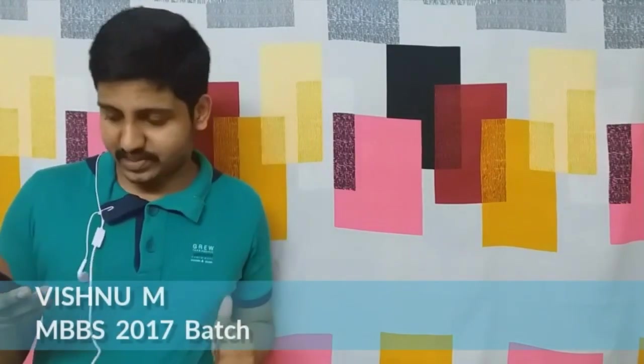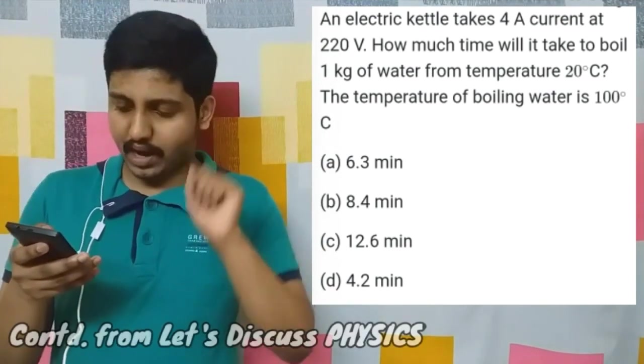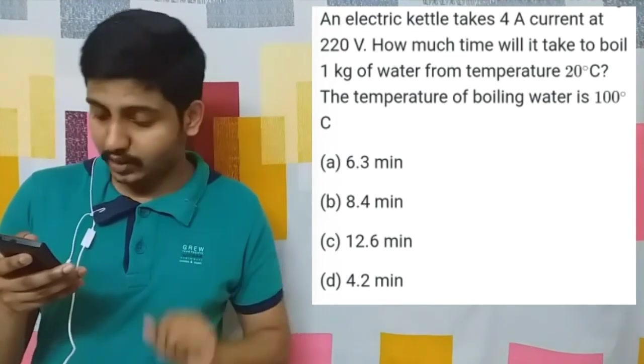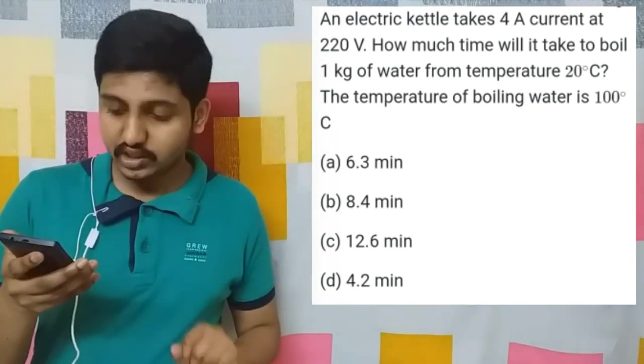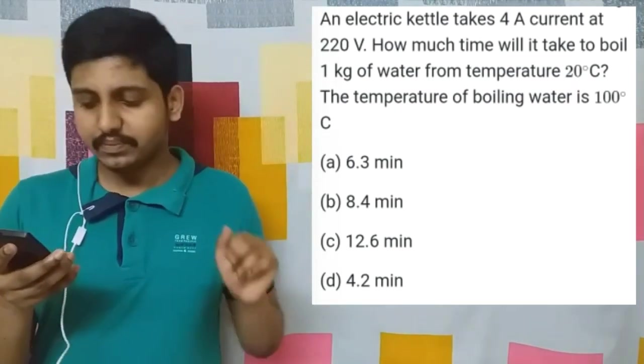Let's take the next question. This is a wonderful question involving both thermodynamics and current electricity. An electric kettle takes 4 ampere current at 220 volt. How much time will it take to boil one kilogram of water from temperature 20 degree Celsius to boiling temperature of 100 degree Celsius?